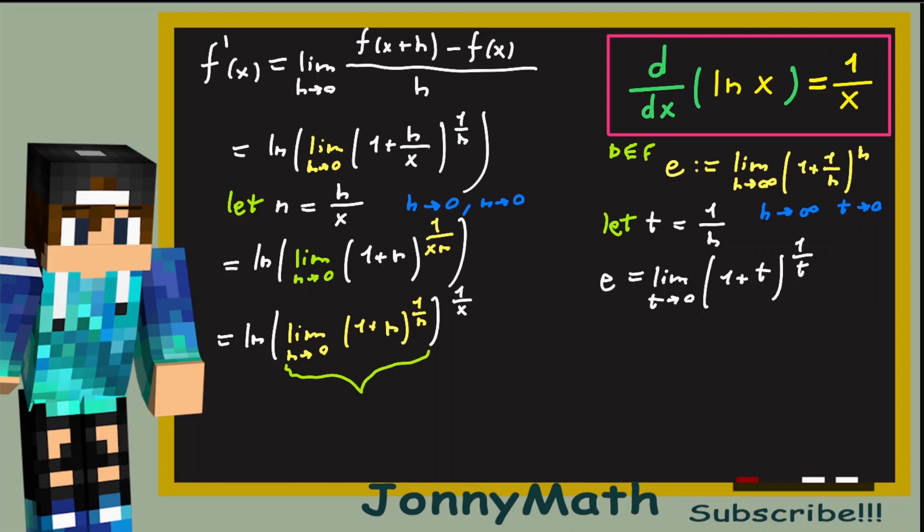And since this part right here, as we saw, is just e, this is just the natural log of e to the 1 over x power. So, 1 over x times the natural log of e, that is just 1 over x.